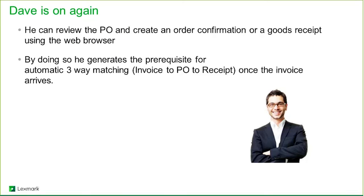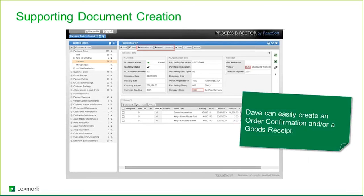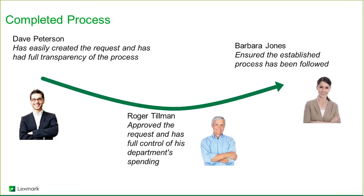Dave can review the purchase order and create a confirmation or goods receipt using his browser, which generates the prerequisites for a three-way match: taking the invoice, matching it to the purchase order, and matching it to the receipt. Everything is set up to accommodate this automatically. Dave has easily created the request with full transparency. Roger has approved it with full control of spending. Barbara is assured that the established process has been followed — a great example of cross-group interaction to control cost and address indirect spend, which is often greatly overlooked.